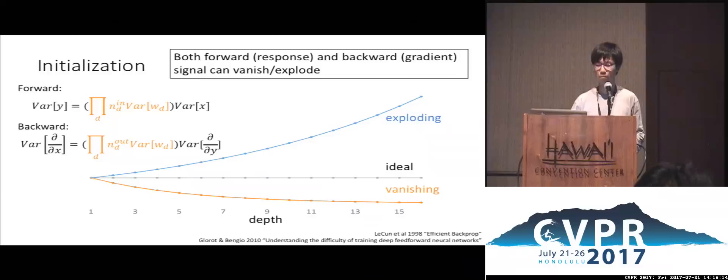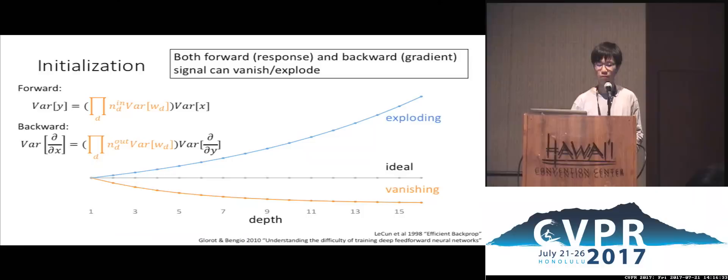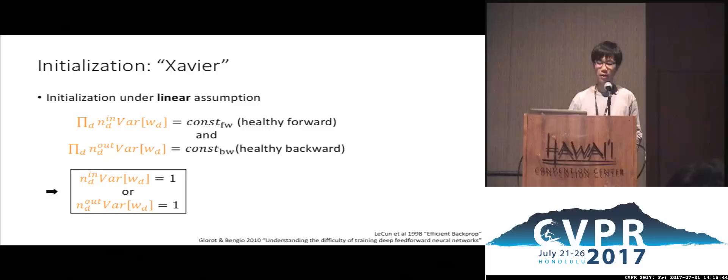This is the reason for the famous vanishing gradient or exploding gradient problem. Actually, both the forward path and the backward path can expose this issue. If the initialization weight is slightly smaller than ideal, it may vanish because it is a product of many small numbers. On the other hand, if it is slightly larger, it will explode. This is why we need careful initialization.